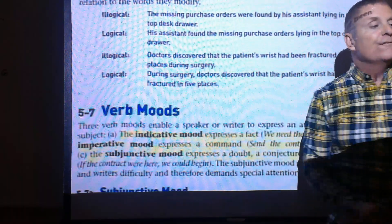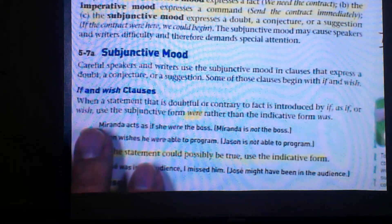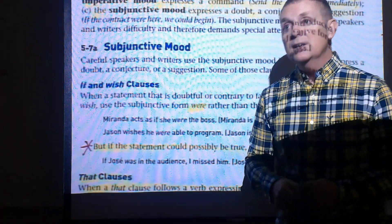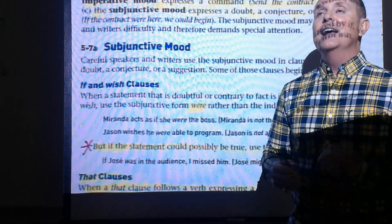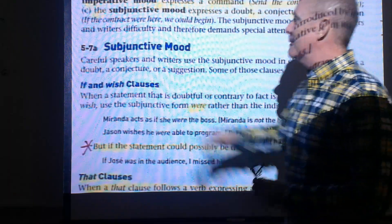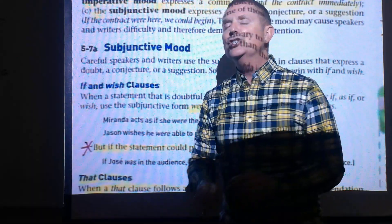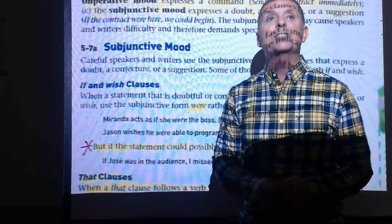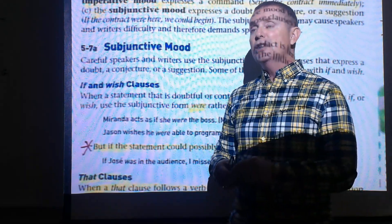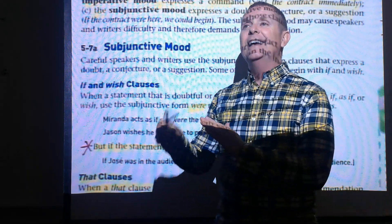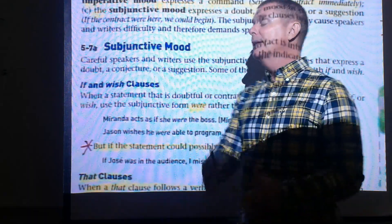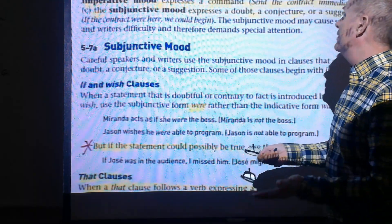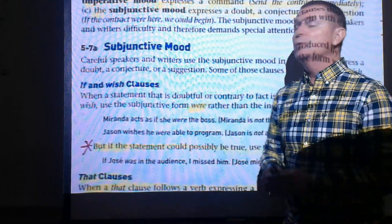Next are the three verb moods: indicative, imperative, and subjunctive — note the spelling s-u-b-j-u-n-c-t-i-v-e, which has no relation to the subjective case pronoun (s-u-b-j-e-c-t-i-v-e). The indicative mood expresses a fact and usually ends with a period, for example: 'We need the contract.'